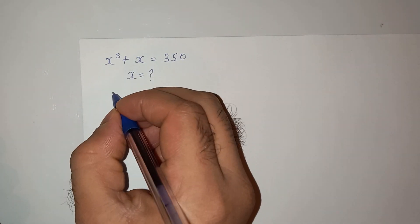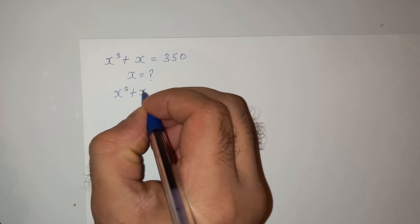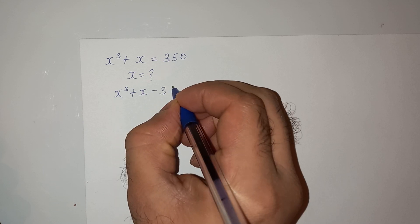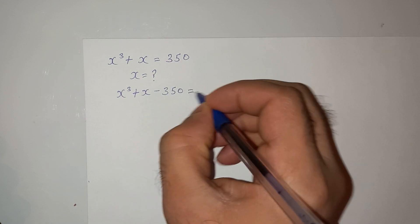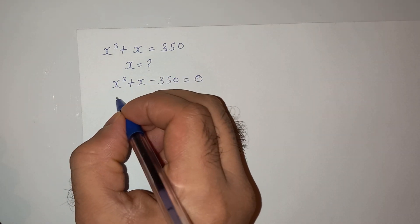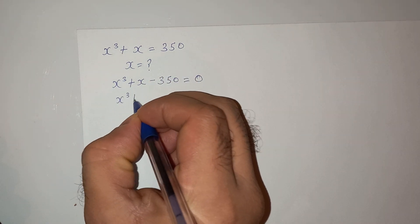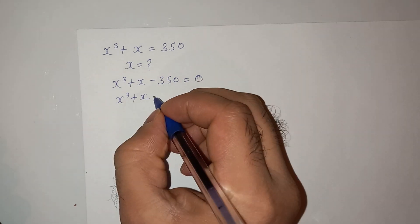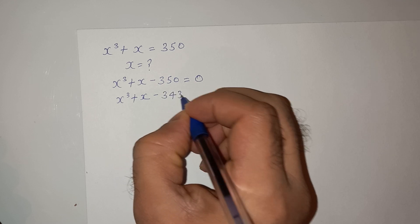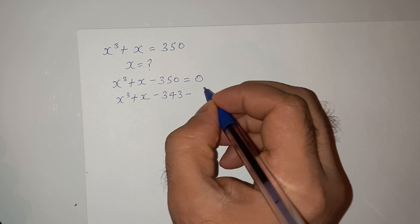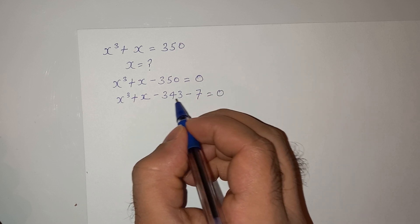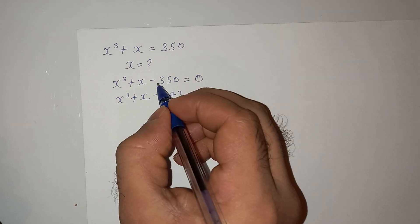We can write this equation as x³ + x, and take 350 to the left-hand side, so it will be minus 350 equals to zero. Now we can write this as x³ + x. Here comes the trick: we can write 350 as 343 + 7, because 343 + 7 equals 350.